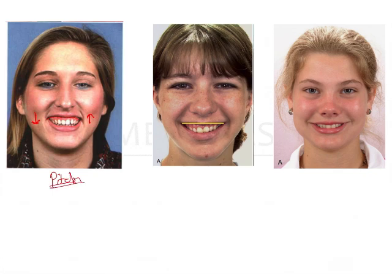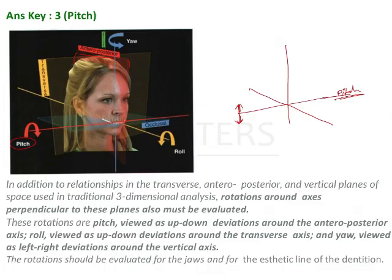The second plane is the transverse plane, marked in yellow. The perpendicular axis passing through the transverse plane is used for roll discrepancies. Roll is also an up and down movement, but along the transverse plane.